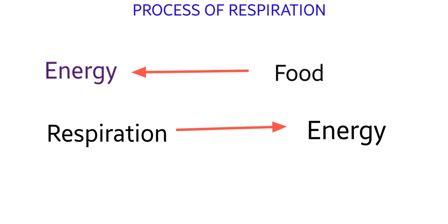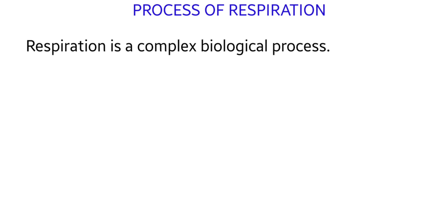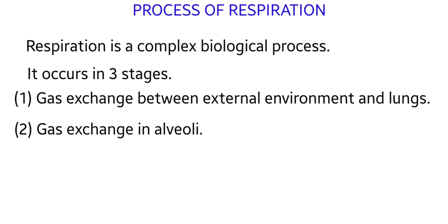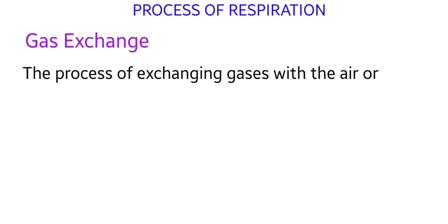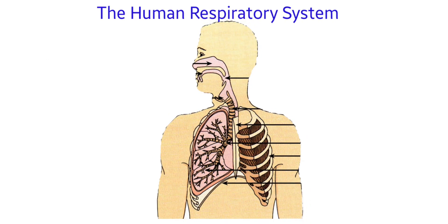This release of energy is done by the process called respiration. In humans, respiration is a complex biological process. It occurs in three stages: gas exchange between the external environment and lungs, gas exchange in alveoli, and cellular respiration. Organisms that respire aerobically must absorb oxygen into their bodies and remove carbon dioxide, which is a waste product of respiration. This exchange of gases with air or water around the organism is called gas exchange.